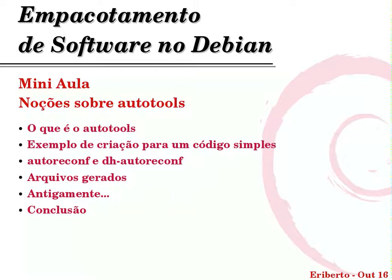Olá a todos. Vamos iniciar agora uma mini aula sobre AutoTools. Os grandes objetivos aqui são permitir que as pessoas que empacotam identifiquem quando o AutoTools está sendo utilizado, saibam o que é o AutoTools e, uma vez que tiverem identificado o AutoTools, procedam corretamente no empacotamento, também em relação ao que se deve ou não citar no Debian Copyright.